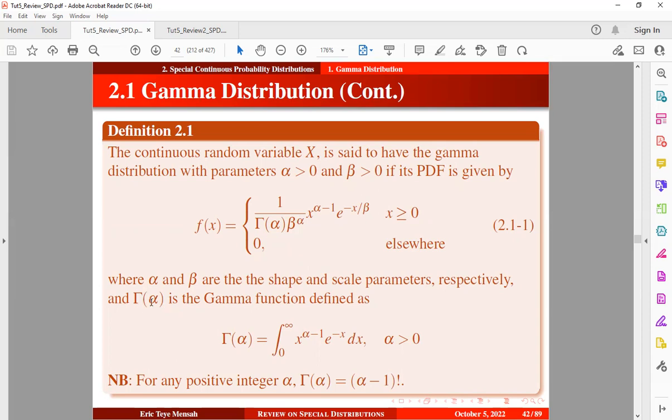So this is the gamma function which is defined as shown below. Now for any positive integer alpha, we have the gamma of alpha to be alpha minus 1 factorial. So kind of take note of this.